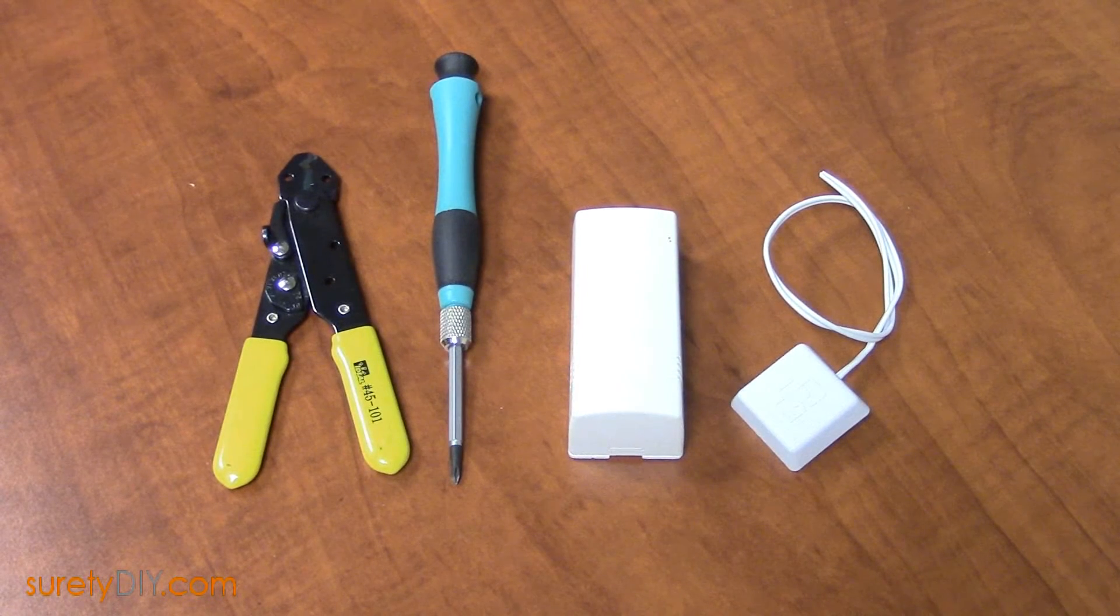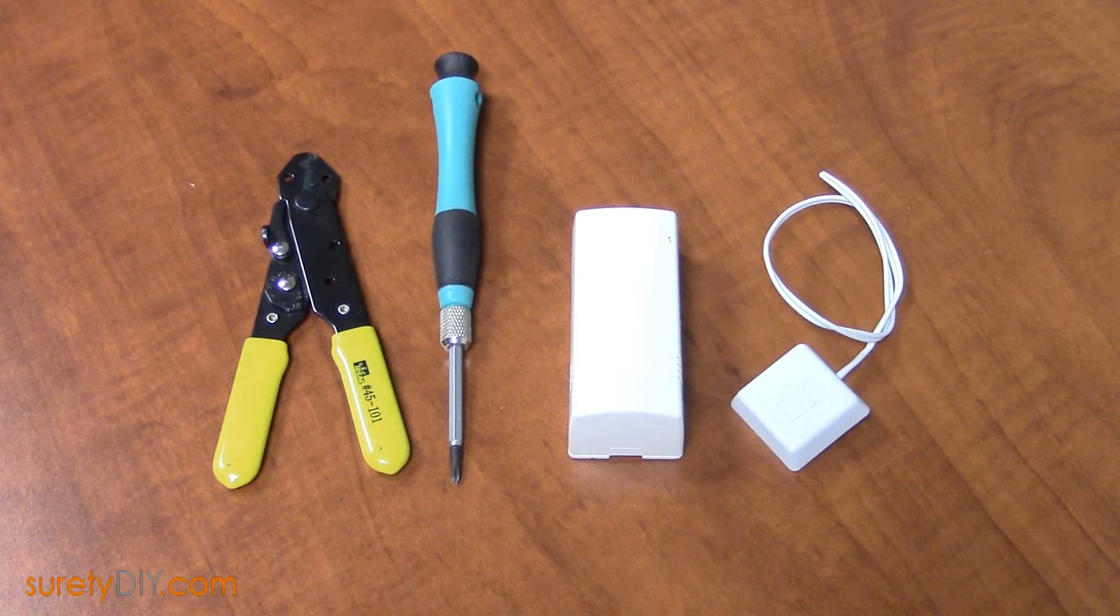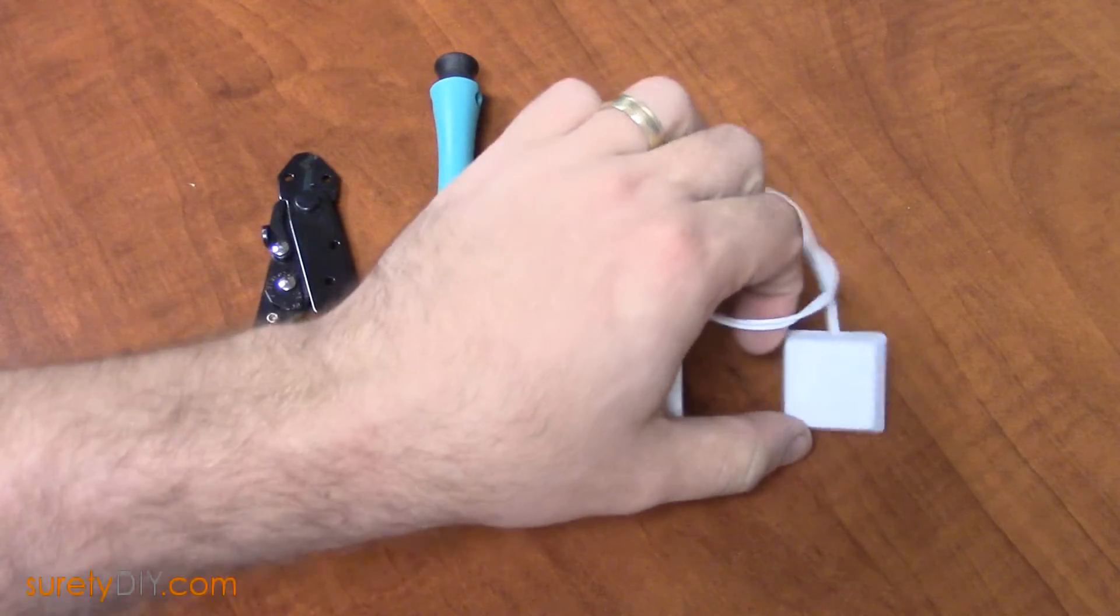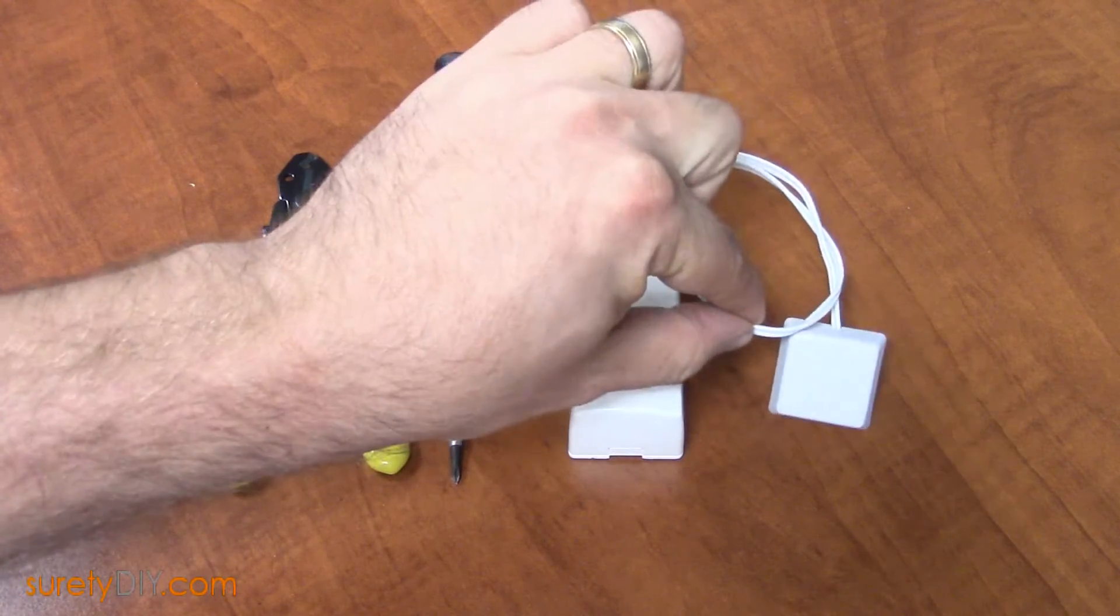In this video, we're going to show you how to make a combined window shock sensor for your Surety DIY alarm system. Integrated wireless options exist, but we like the reliability of using a dedicated shock sensor.